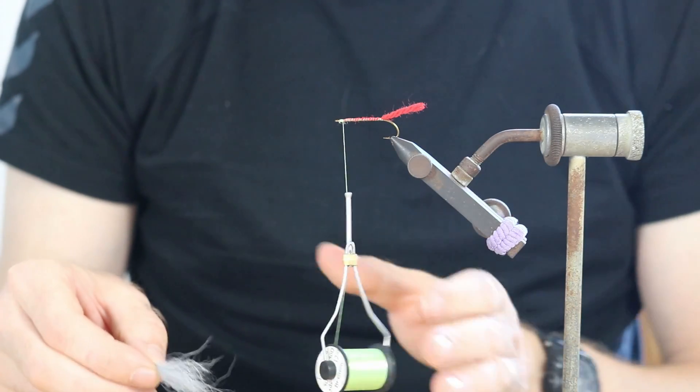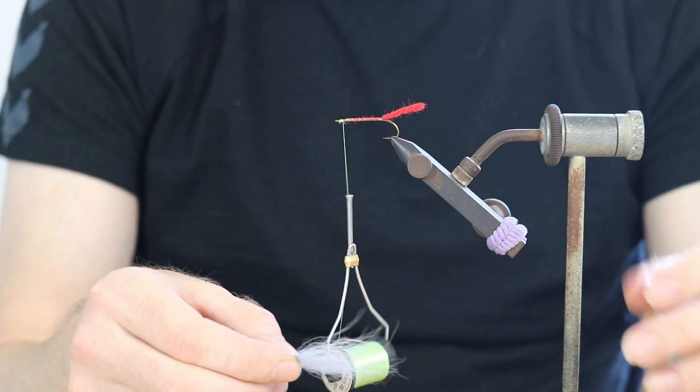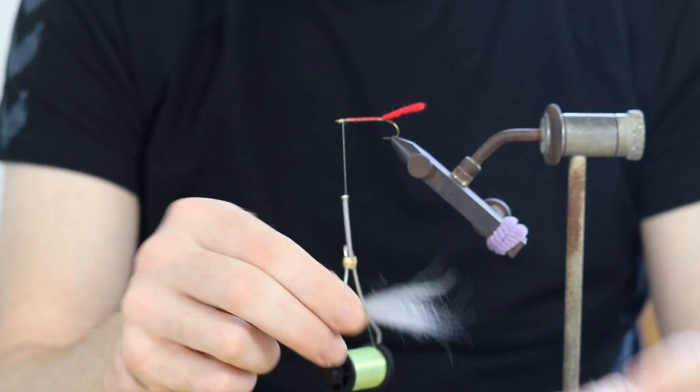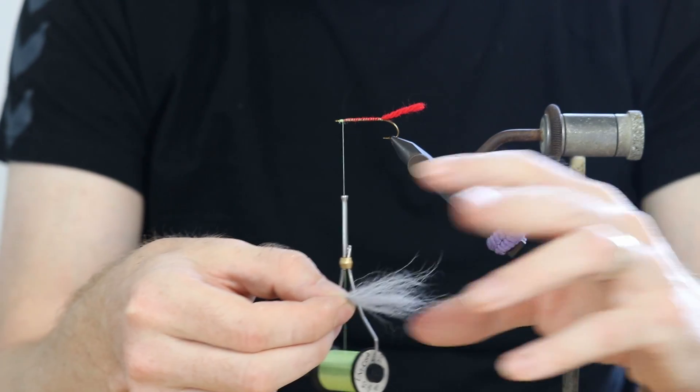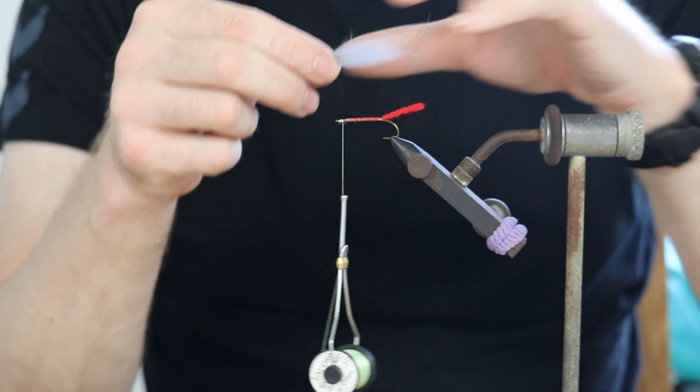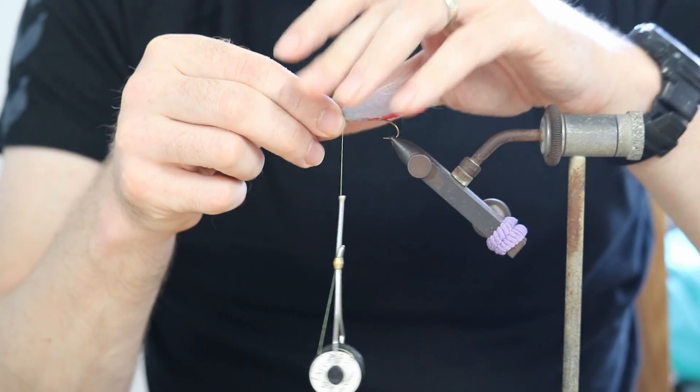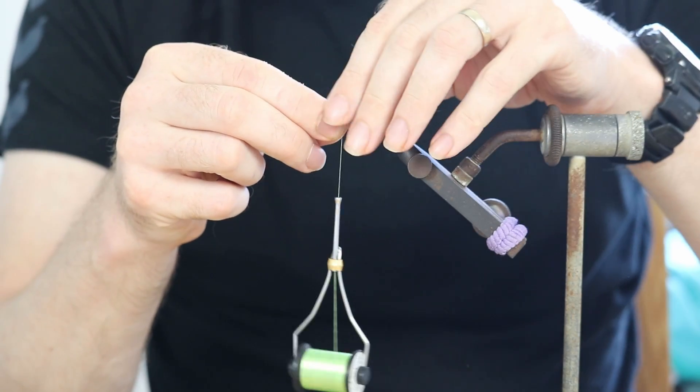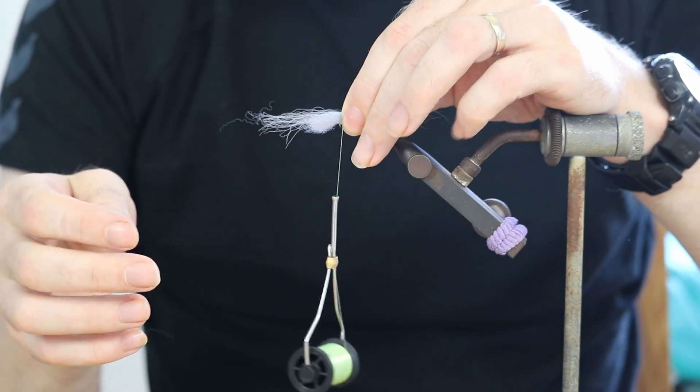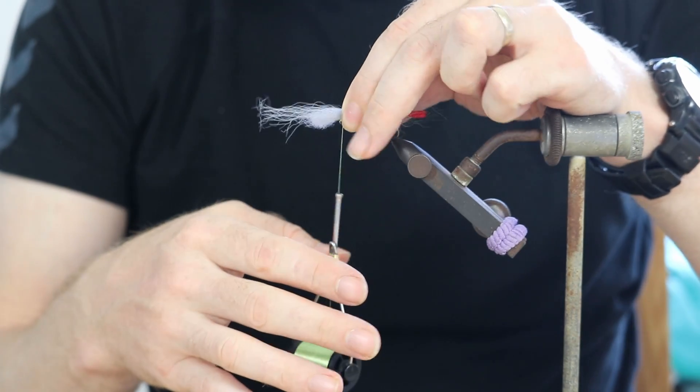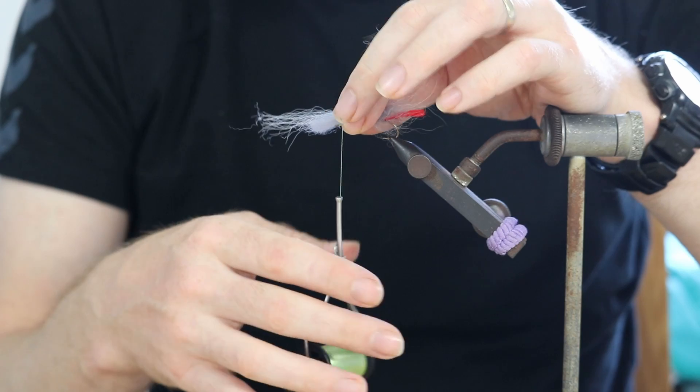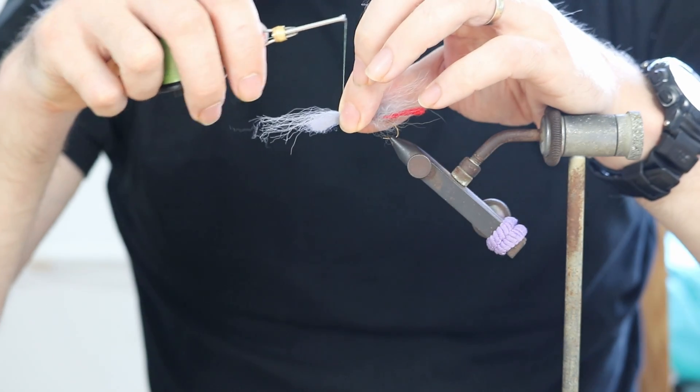So let's look at an example at the front. Let's say we want to tie in this hair material, fox, on the top of the shank. Put it where we want, check the length we want. Hold with your left fingers, two fingers like so, on top of the shank. Do the soft loop.